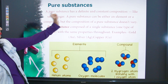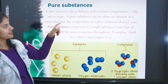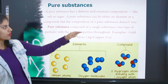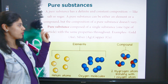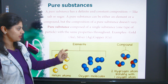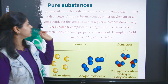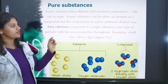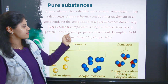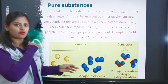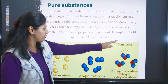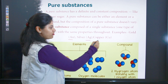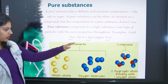A pure substance has a definite and constant composition, like salt or sugar. A pure substance can be either an element or a compound — ye do categories hain: elements and compounds. The composition of a pure substance does not vary. It is composed of a single type of particle with the same properties throughout. Examples: gold (Au), silver (Ag), and copper (Cu).